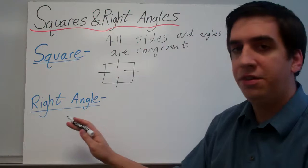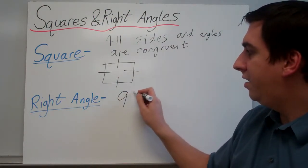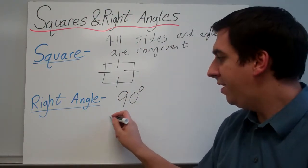It has a special kind of angle called a right angle. A right angle is 90 degrees. Sometimes we like to think of it as being a corner.